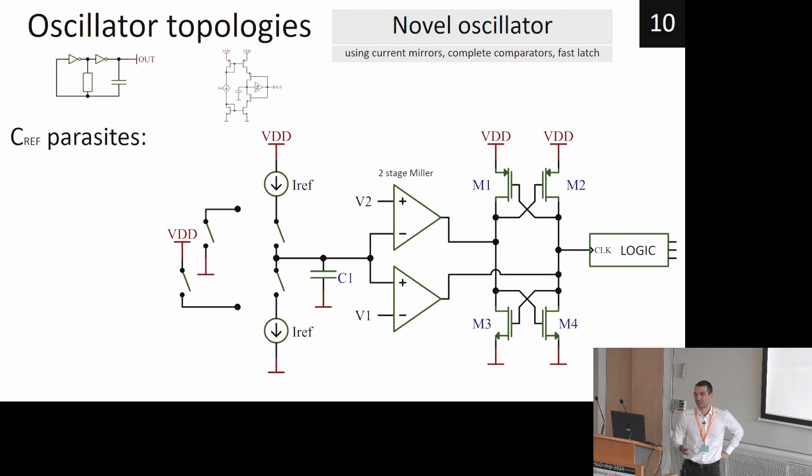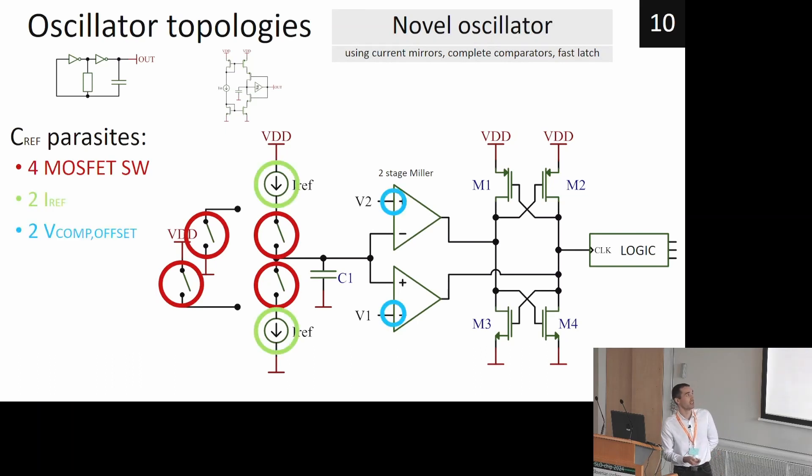the use of comparators. But now we introduce different types of parasitics such as switches, current mirrors, offset and input capacitance of comparators, and at least five propagation delays.